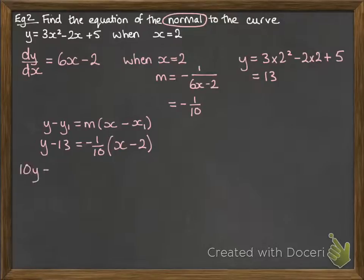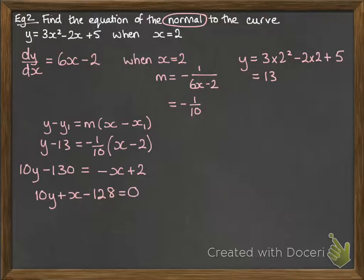Generally speaking, it's good form to try and keep things as integers where possible. Then we would write that as an equation in that form, equal to 0.